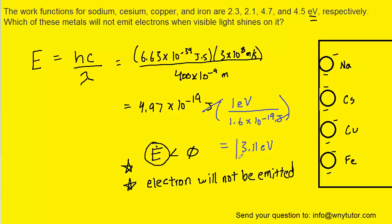This is the maximum amount of visible light energy that we can shine on the metal surface. Remember the concept that if this energy is less than the work function, then an electron will not be emitted.